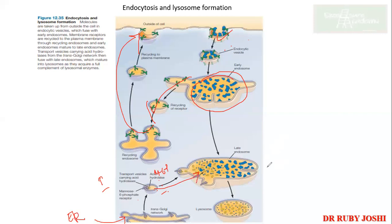The fusion of the late endosome with the acid hydrolase vesicle results in the formation of the mature lysosome. The acid hydrolases and proteases present inside then degrade all the components that were brought in and release them for cellular functions.